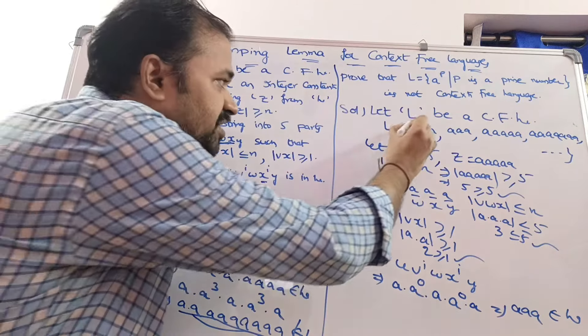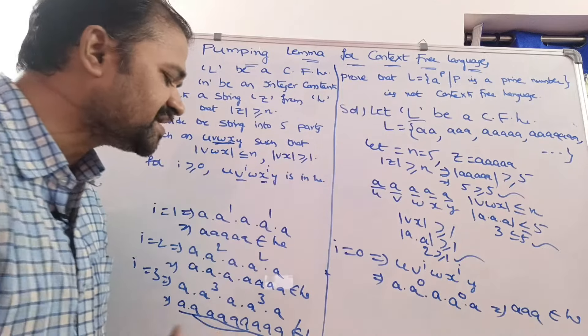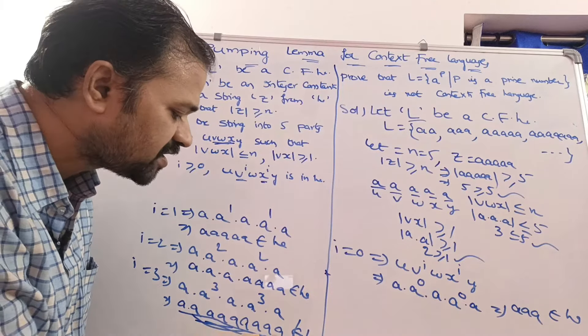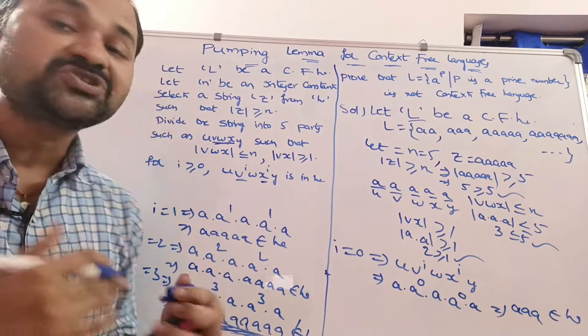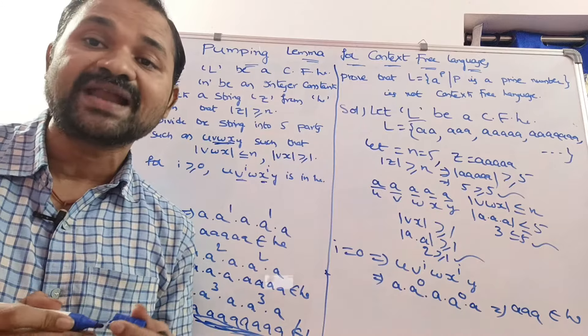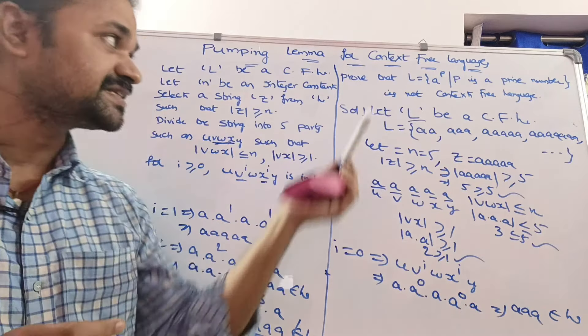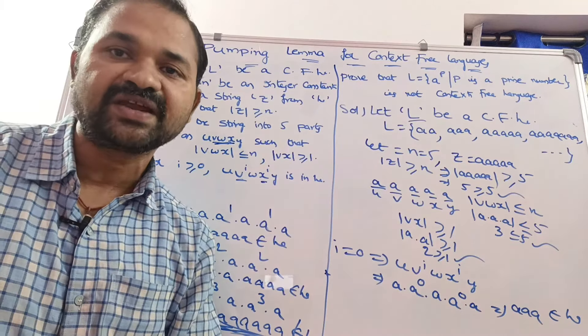We initially assumed the language was a context-free language, but we obtained a string not present in the language. This contradiction allows us to conclude that L = {a^p | p is prime} is not a context-free language.